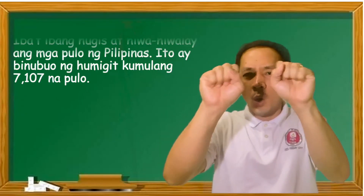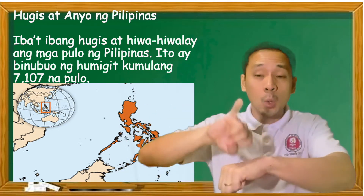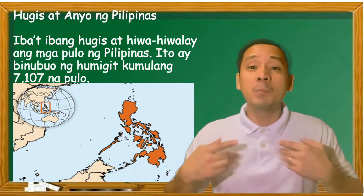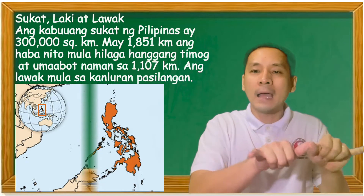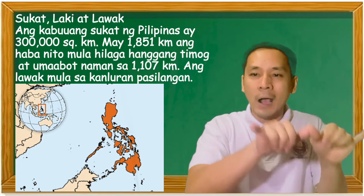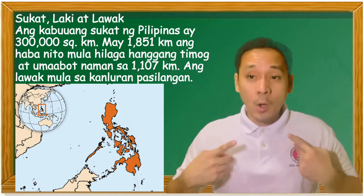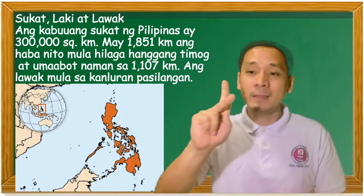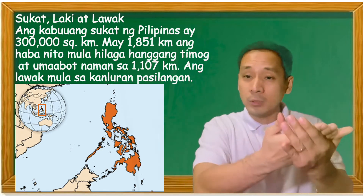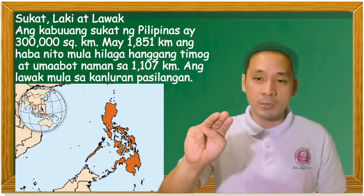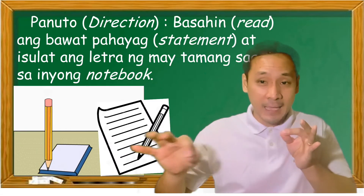Hugis at anyo ng Pilipinas. Iba't iba ang hugis at hiwahiwalay ang mga pulo ng Pilipinas. Ito ay binubuo ng humigit kumulang 7,107 na pulo. Sukat, laki, at lawak: ang kabuuang sukat ng Pilipinas ay 300,000 square kilometers. May 1,851 kilometro ang haba nito mula hilaga hanggang timog, at umaabot naman sa 1,107 kilometers ang lawak mula sa kanluran pasilangan.